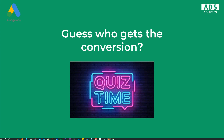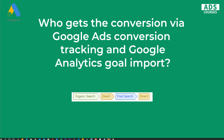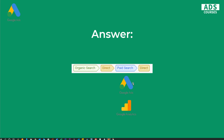Situation one: who gets the conversion via Google Ads conversion tracking, and which traffic source gets a conversion in Google Analytics Goal import? In this situation, the conversion path is: organic search, direct, paid search, direct. The answer is — with both solutions — paid search gets the conversion, both in Google Ads conversion tracking and in Google Analytics Goal import.